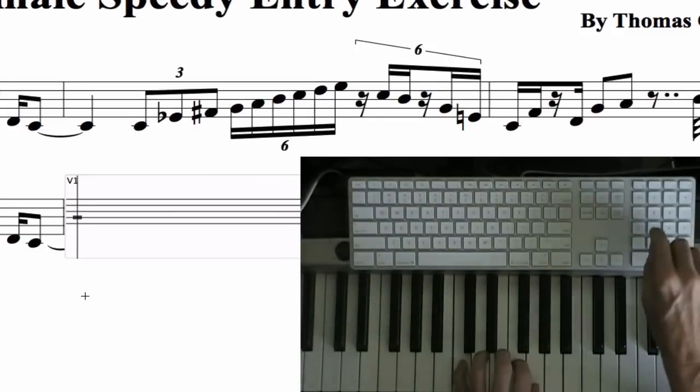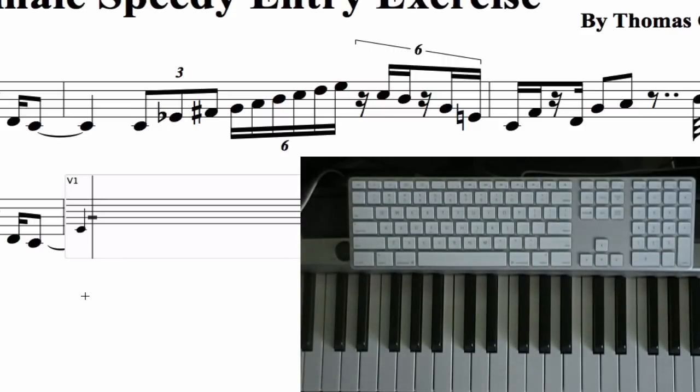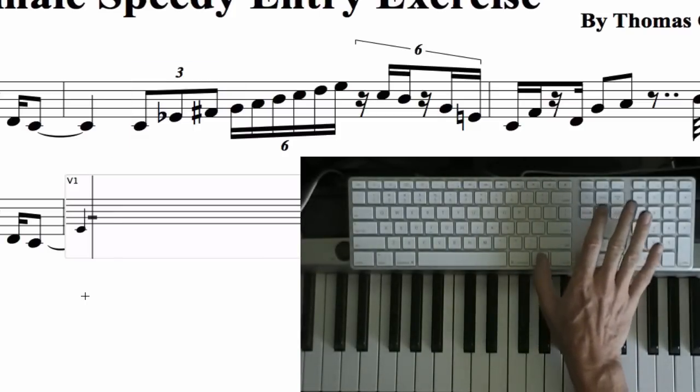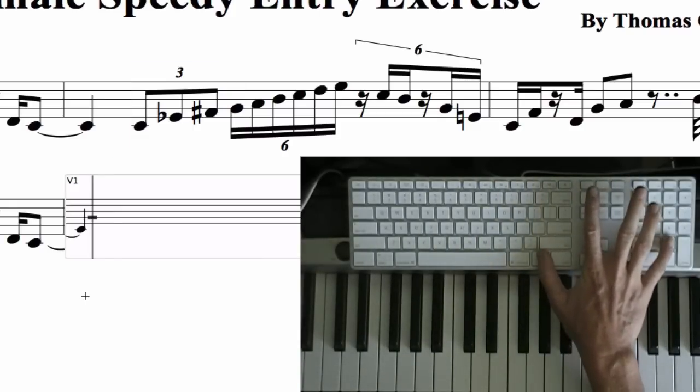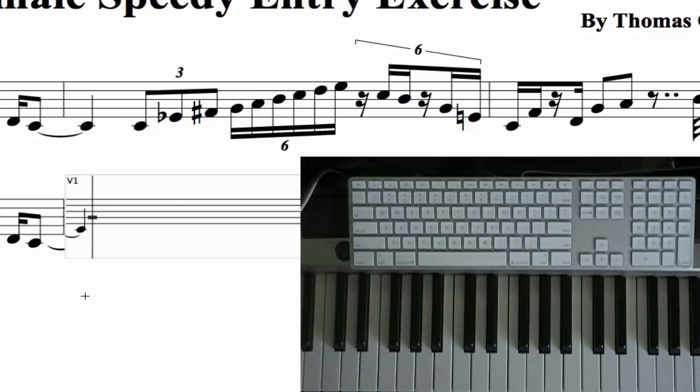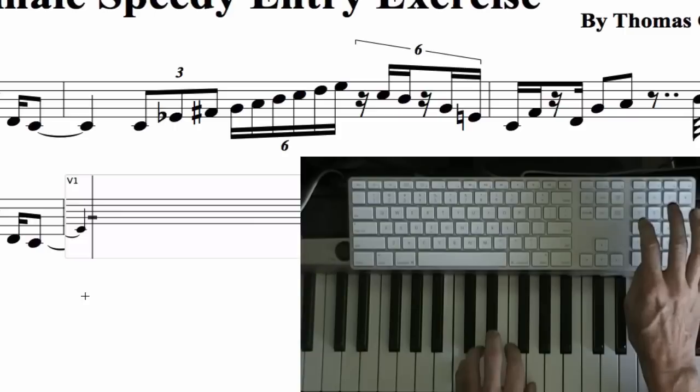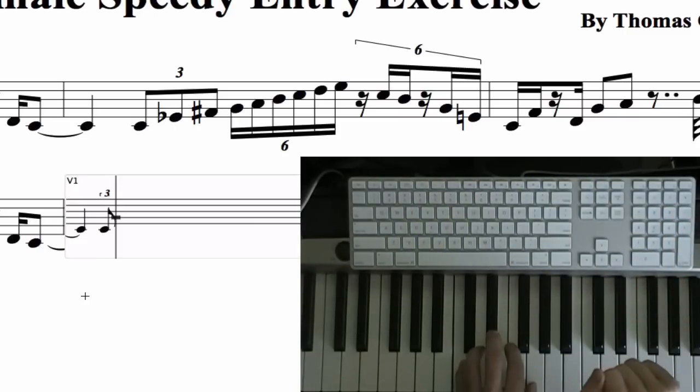So I need a quarter note. Okay, now we have to put in triplets, eighth note triplets. First I have to tell Finale we want triplets, so I press option 3 for triplet. And now I can just play, as usual, the pitch and press 4 for eighth note, triplet in this case.